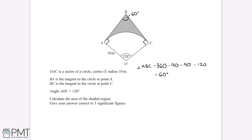The approach is to subtract the area of the sector from the area of the total quadrilateral. To find the area of the quadrilateral, we split it in half to form two right-angled triangles. This means angle ABO will be half of 60°, making it 30 degrees, and angle BAO will be half, making it 60 degrees.